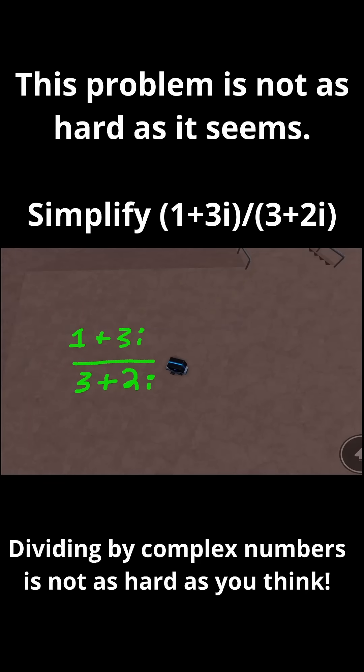In this problem, we have 1 plus 3i divided by 3 plus 2i. So I need to simplify this because we have an imaginary number in the bottom of the fraction, and we don't want that. So how do we get rid of it?